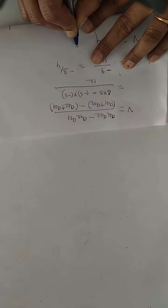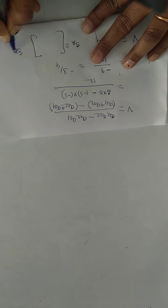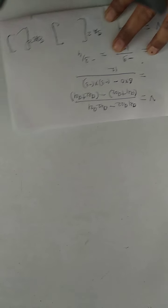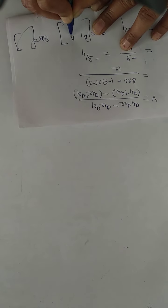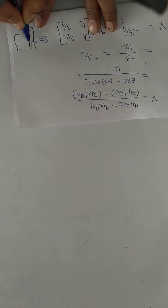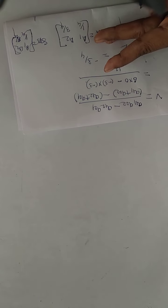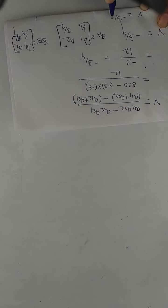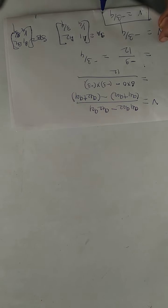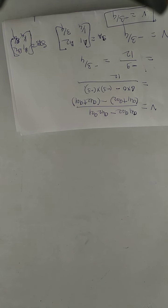Finally, write the strategy for player A: SA equals (A1, A2) with (1 by 4, 3 by 4). Strategy for player B: SB equals (B1, B2) with (1 by 4, 3 by 4). And value of game V equals minus 3 by 4. These are the two examples for mixed strategy.